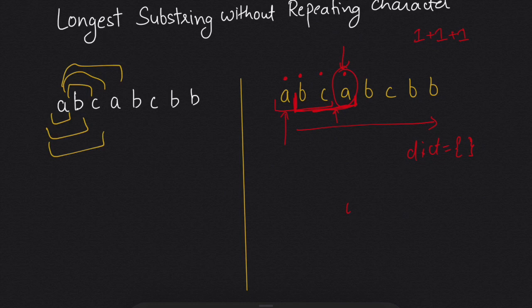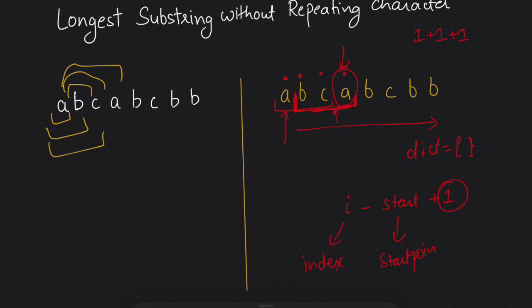While moving forward, we keep checking whether the character is in the dictionary or not. If it is, we increment our start point by one. At the end, we calculate the length as i minus start plus one, where 'i' is our current index and 'start' is our start point. We add one because we are using a for loop with range, which starts from zero. Let's write the code.